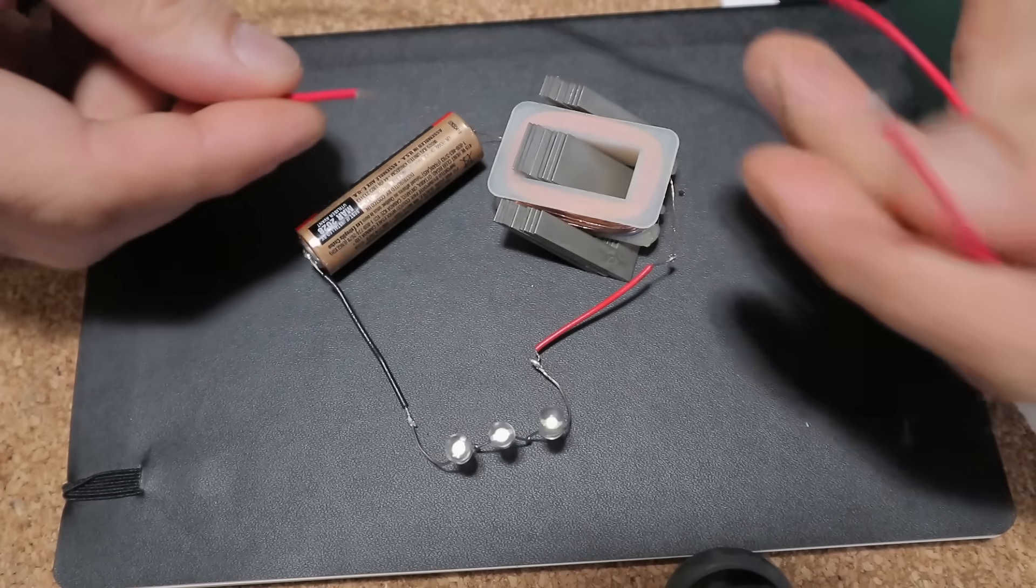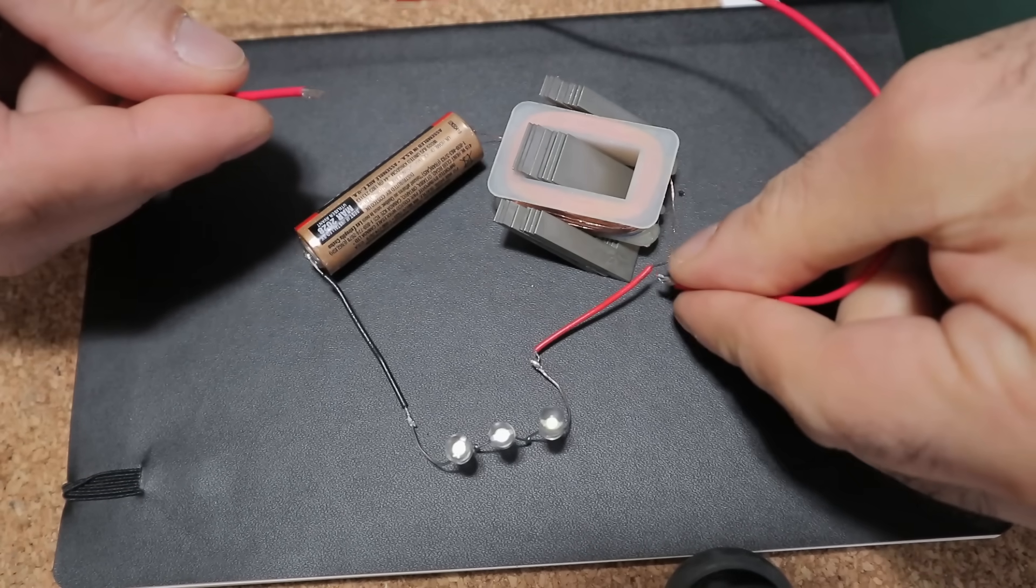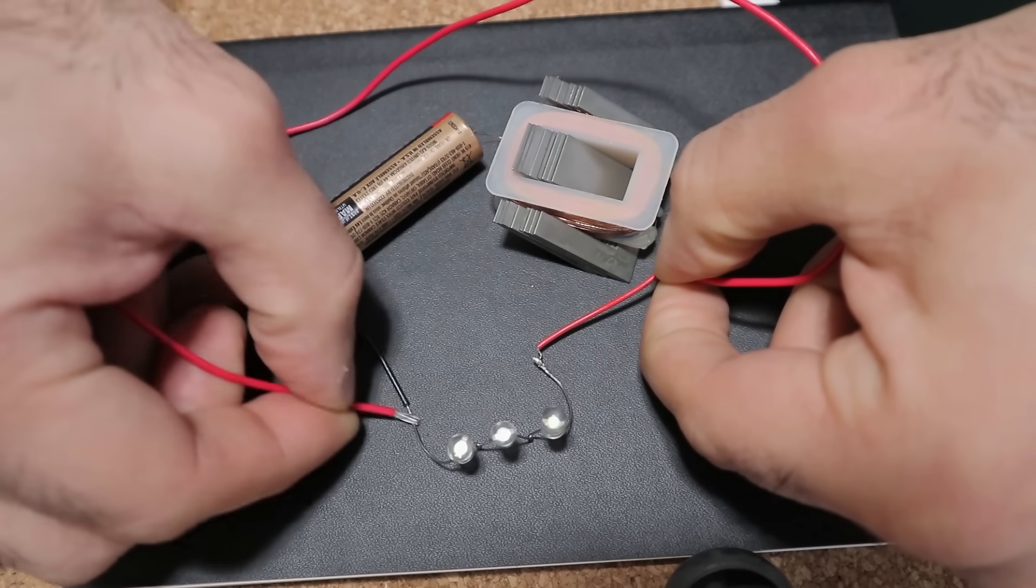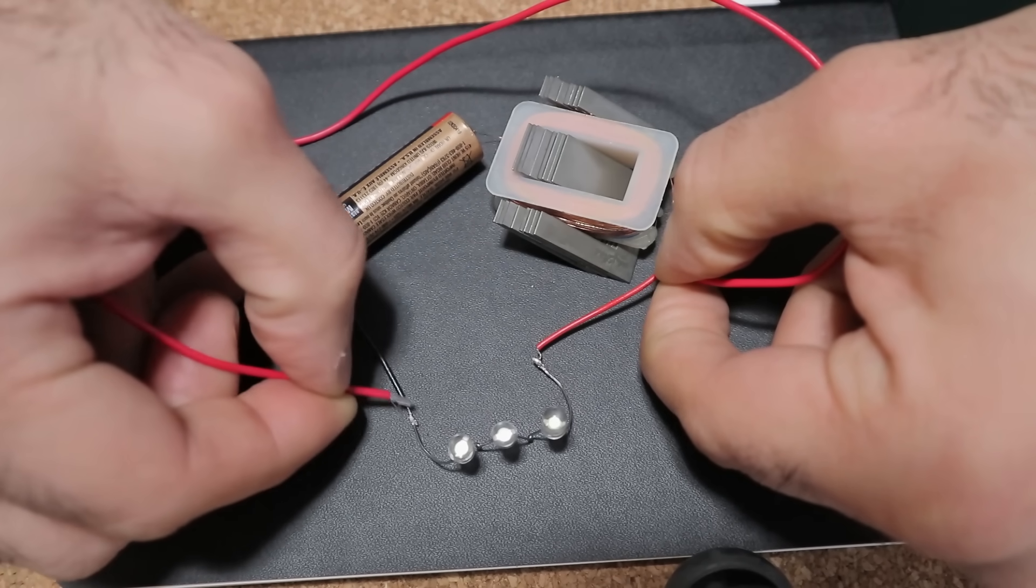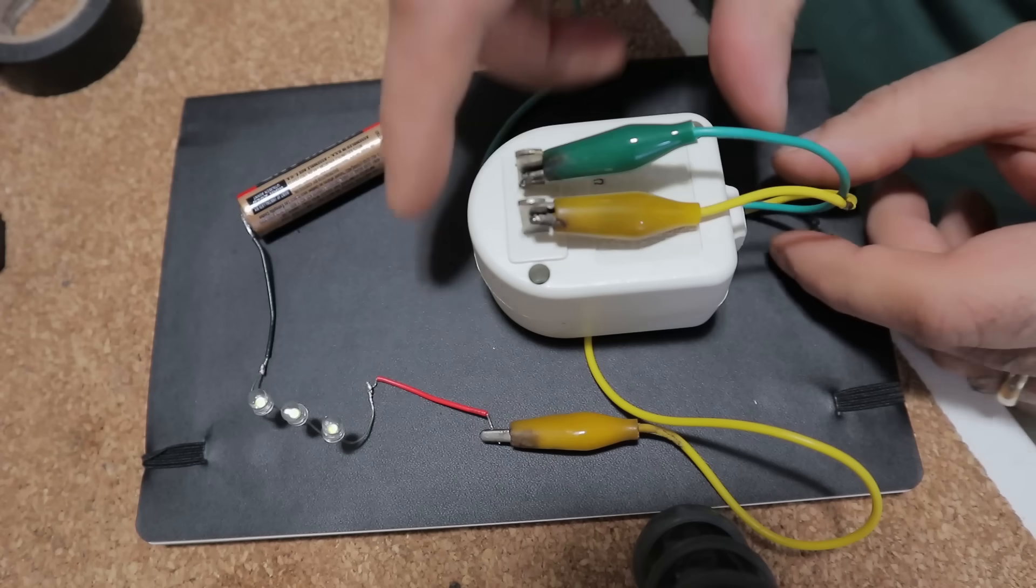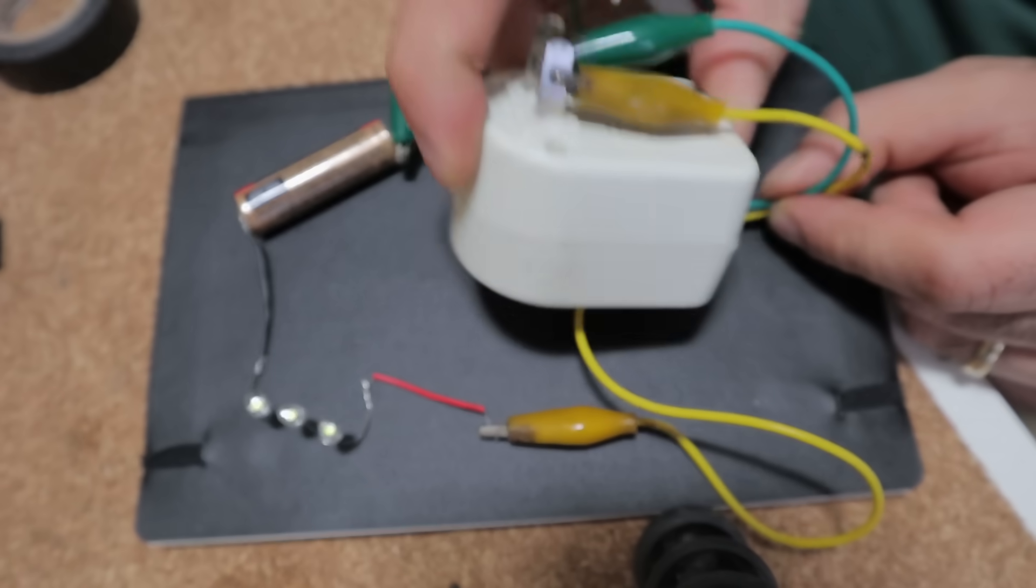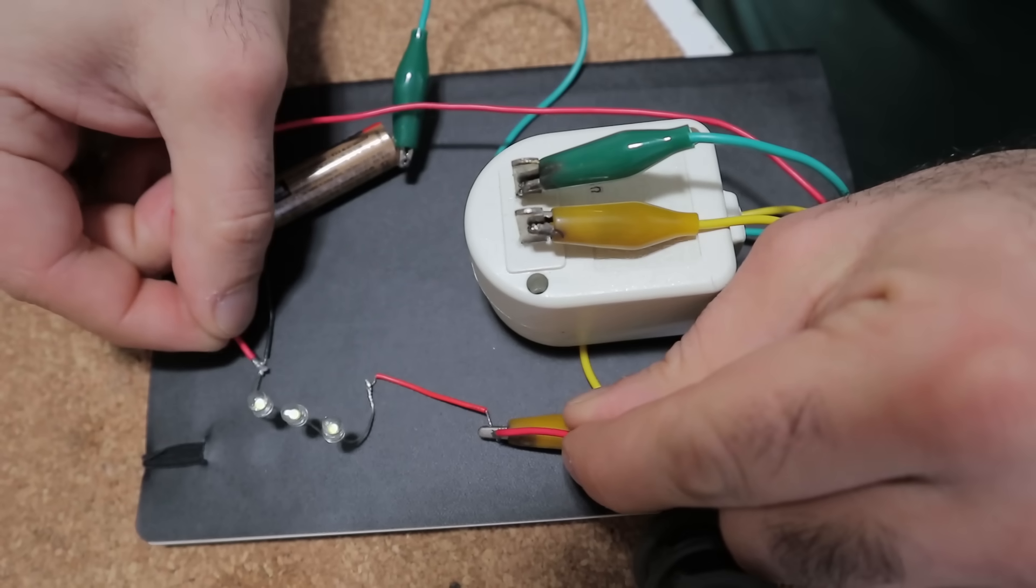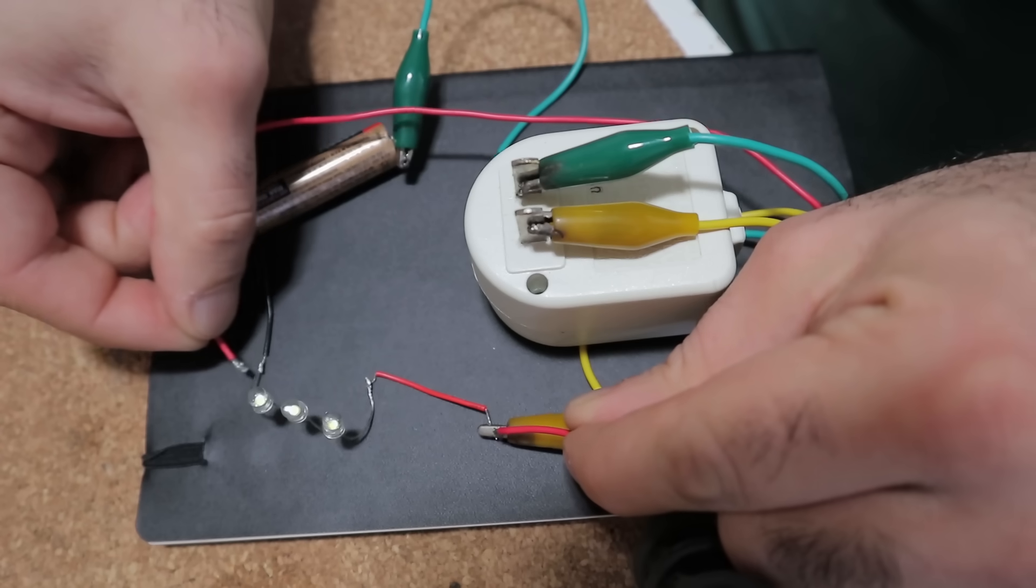But now if I short across the LEDs with a piece of wire and let go, BAM! I have nine volt pulses across them and they turn on. And here I can replace the coil with the wall adapter and do the same thing. It's even brighter. Magic!